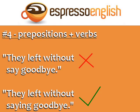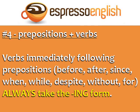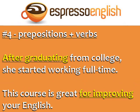Number four: prepositions and verbs. 'They left without say goodbye' is incorrect. The correct sentence is 'they left without saying goodbye.' Verbs immediately following prepositions like before, after, since, when, while, despite, without, and for always take the -ing form. Here are some examples: 'After graduating from college, she started working full-time.' 'This course is great for improving your English.'